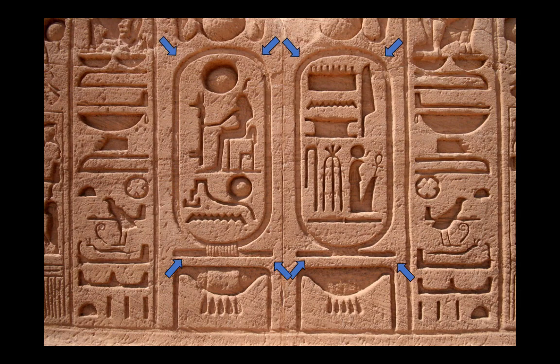The blue arrows point at a structure which is supposed to represent a rope encircling a group of hieroglyphs. This structure is called, with a French word, a cartouche, or with its original ancient Egyptian name, Sher, and it's supposed to mark a person's name with or without their honorific. So whenever you see a cartouche, you can be sure it contains a person's name.